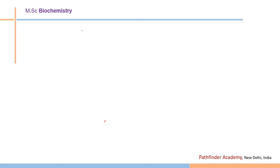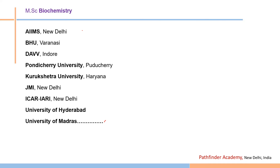Similarly, for MSc Biochemistry, there are many good options. The names listed here are in random order and this is not the complete list. You can pursue MSc Biochemistry from AIIMS, BHU, Pondicherry University, Jamia Millia Islamia, University of Hyderabad, and University of Madras, among many other institutions and universities.